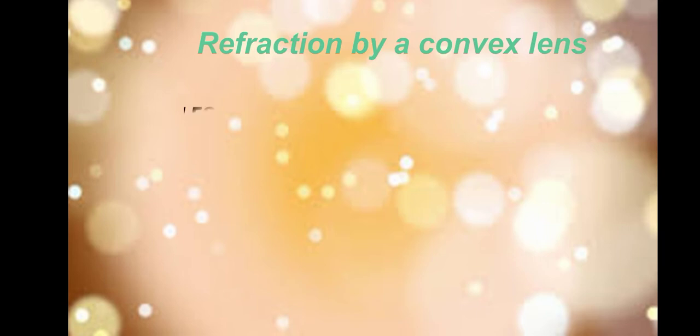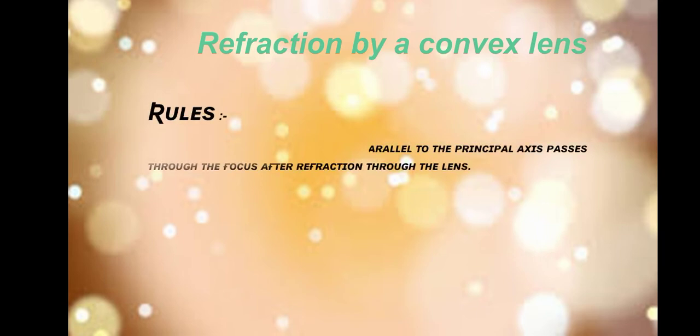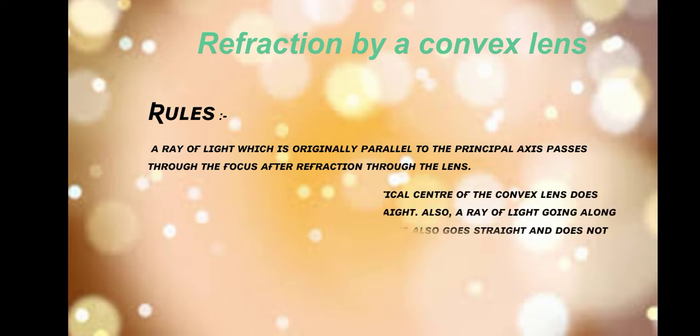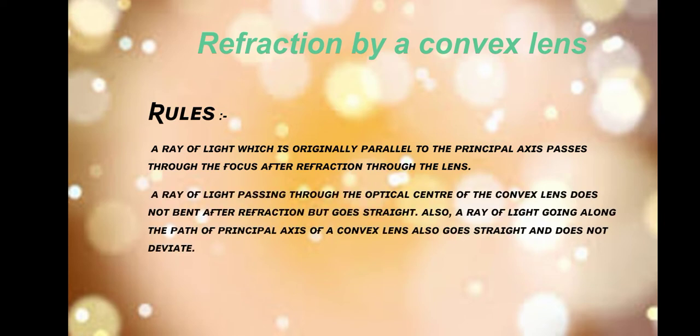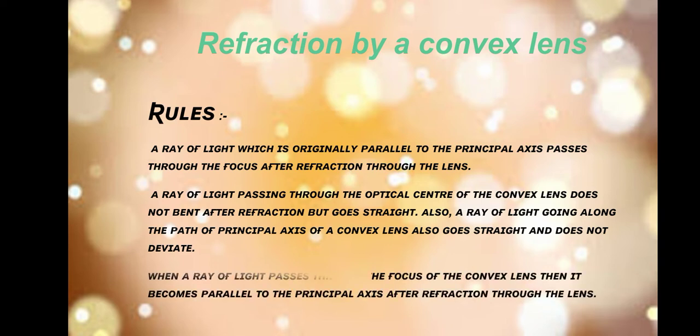Refraction by a convex lens. A ray of light which is originally parallel to the principal axis passes through the focus after refraction through the lens. A ray of light passing through the optical center of the convex lens does not bend after refraction but goes straight. Also, a ray of light going along the path of the principal axis of a convex lens also goes straight and does not deviate. When a ray of light passes through the focus of the convex lens, it becomes parallel to the principal axis after refraction through the lens.